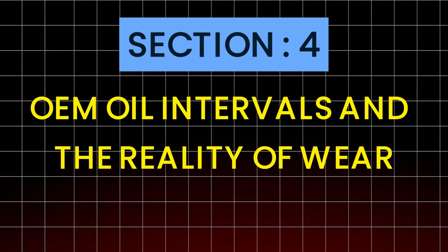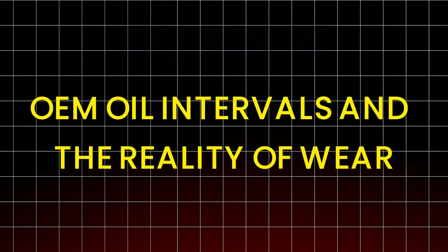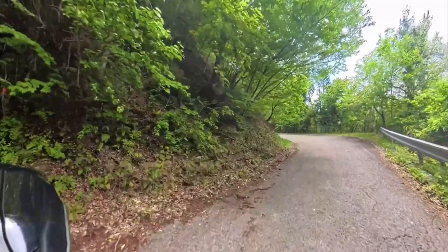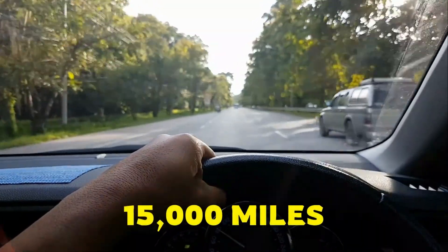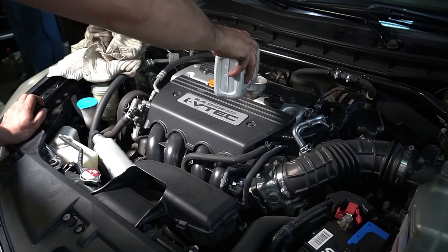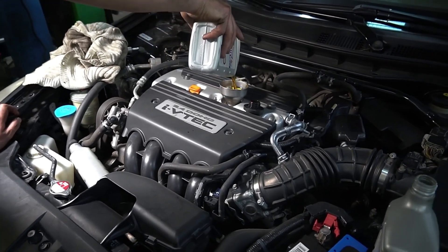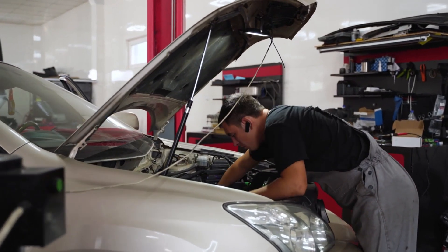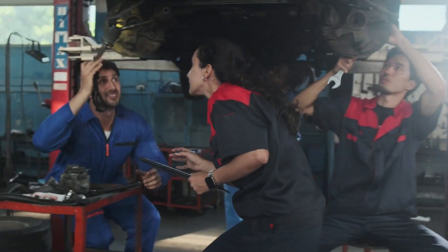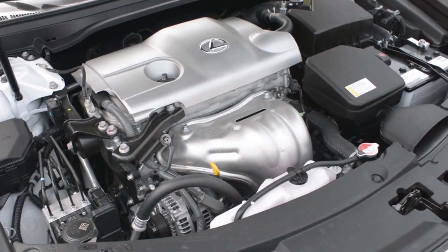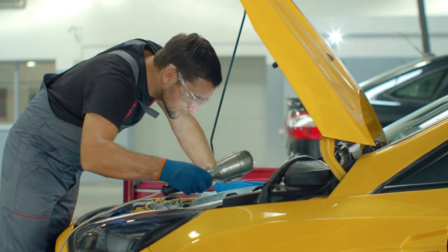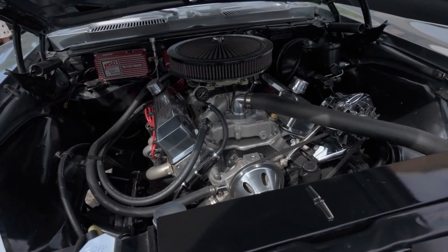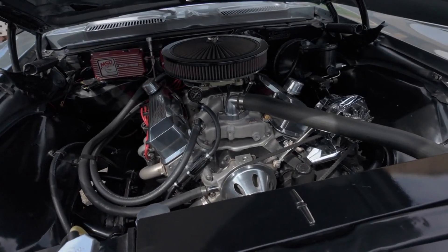Section 4: OEM Oil Intervals and the Reality of Wear. Now, let's address the elephant in the room: factory oil change intervals. 10,000 miles, 15,000 miles, lifetime fluids. Those intervals were not designed to maximize engine longevity. They were designed to reduce advertised ownership costs. Short maintenance schedules look expensive on paper. Long maintenance schedules look attractive in marketing brochures. But engines don't care about marketing. And nowhere is this more damaging than during engine break-in. Break-in is the highest wear period. The highest wear an engine will ever experience does not happen at high mileage. It happens early.